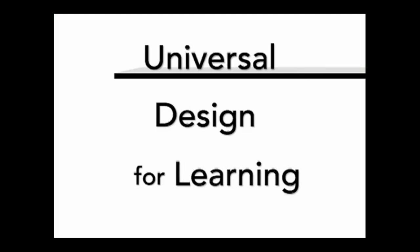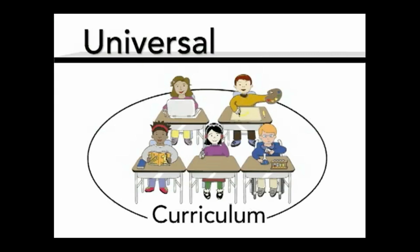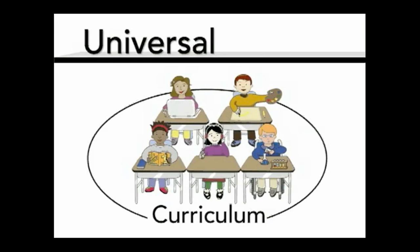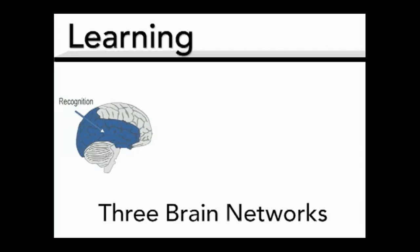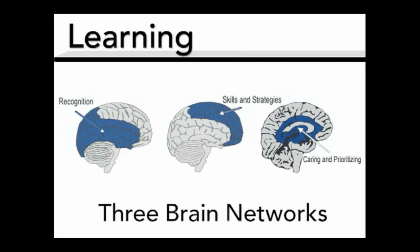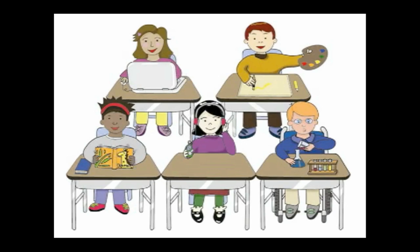Let's think about the word 'universal' — curriculum that can be used and understood by everyone. Each learner brings her own background, strengths, needs, and interests, and curriculum should provide genuine learning opportunities for each and every student. Learning is not one thing. Neuroscience tells us that our brains have three broad networks: one for recognition — the what of learning; one for skills and strategies — the how of learning; and one for caring and prioritizing — the why of learning. Students need to gain knowledge, skills, and enthusiasm, and a curriculum needs to help them do all three. But every learner is unique, and one size does not fit all.